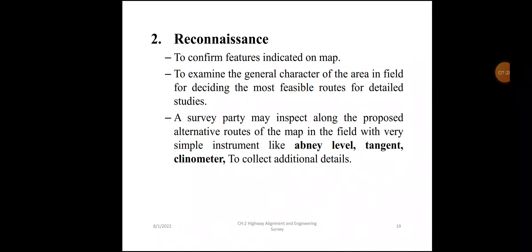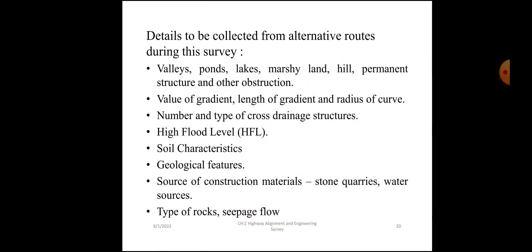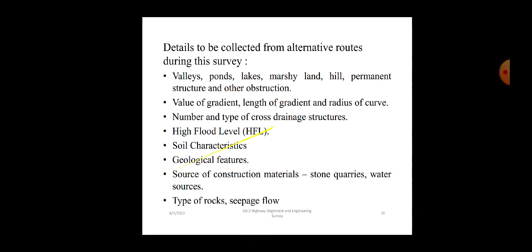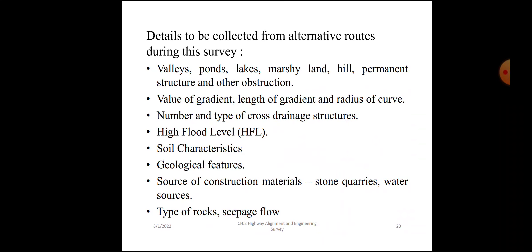Reconnaissance: carried out to confirm features indicated on the map and to examine the general character of the area in the field for deciding the most feasible routes for detailed studies. A survey party may inspect along proposed alternative routes with simple instruments like Abney level, tangent clinometer to collect additional details. Details collected from alternative routes include: valleys, ponds, lakes, marshy land, hills, permanent structures; value of gradient, length of gradient and radius of curve; number and type of cross drainage structures; high flood level; soil characteristics; geological features; source of construction materials; stone quarries; water sources; types of rocks.